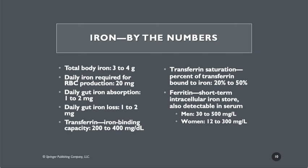Transferrin is the transport form, and it is about 20 to 50 percent bound to iron. We can use that percent of iron binding as a tool to help us figure out how well supplied the body is with iron and whether somebody needs more iron. Ferritin is the intracellular storage form of iron. Some of it is circulating in the blood, and we can measure that tiny amount in the serum as well. There are different levels for men and women.